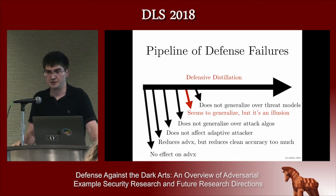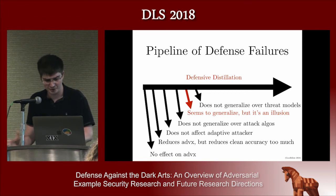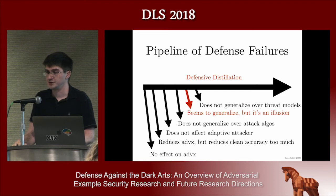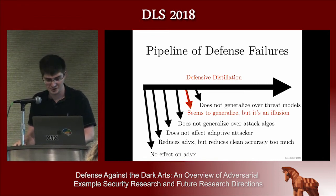One example is defensive distillation — a model that performed very well under many different benchmarks, but later Nicholas Carlini was able to break it with a more powerful optimization approach. This happens all the time. Another recent example was one of my own papers on using thermometer codes to improve model robustness — it turned out to offer no advantage and was broken when people tried new attack algorithms on it.